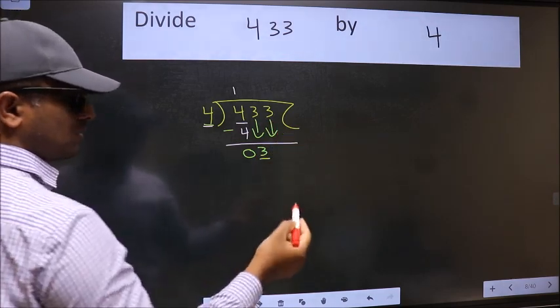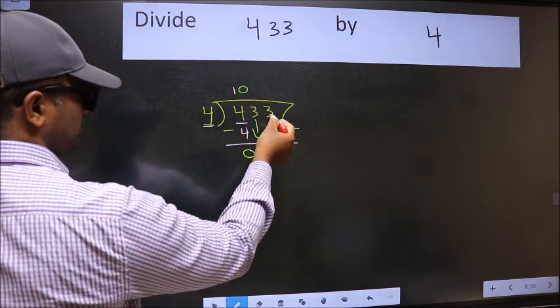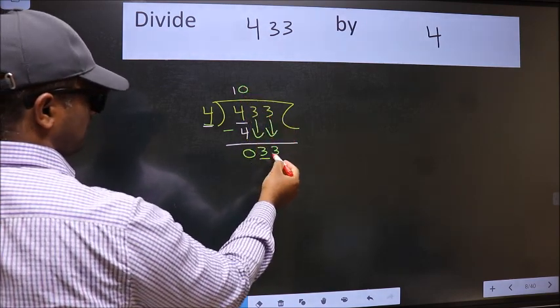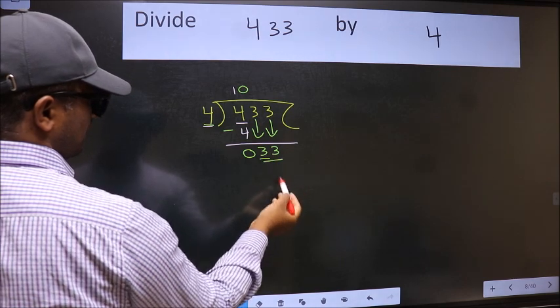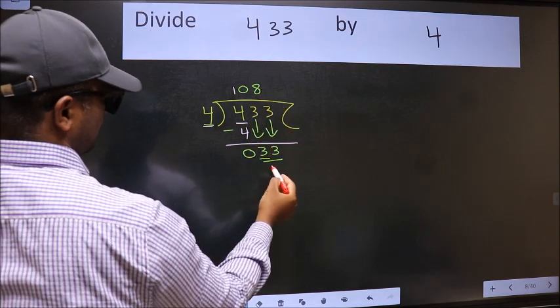And the rule to bring down second number is we should put 0 here. Then only we can bring this number down. Now 33. A number close to 33 in 4 table is 4 8s 32.